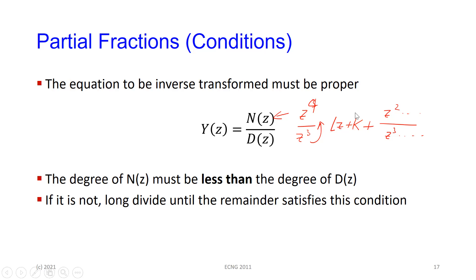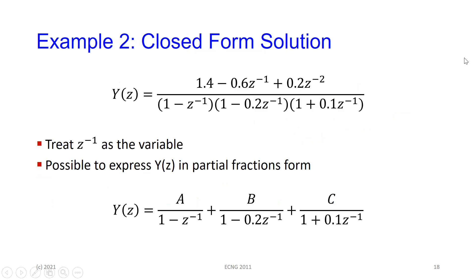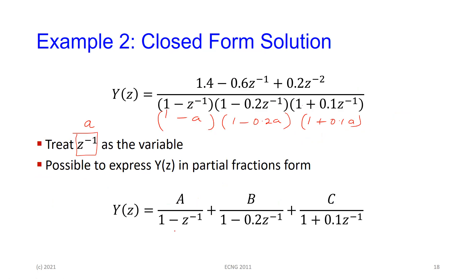This is going to be simple roots. So you get A over the first factor, B over the second factor, and C over the third factor, and you solve for A, B, and C. You either do it by the cover-up method or you could get three simultaneous equations. Whatever you're accustomed to and comfortable doing — apply to this. Just remember that Z to the minus one is the variable, and everything else will work.